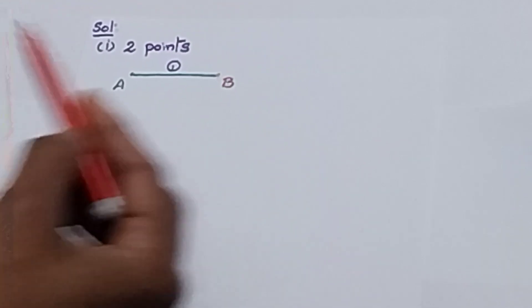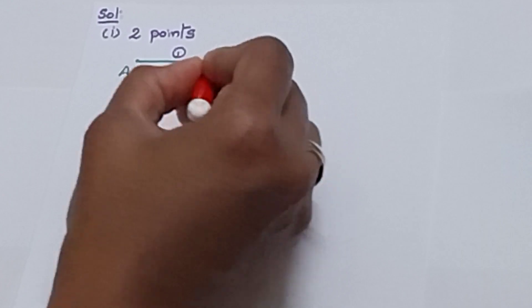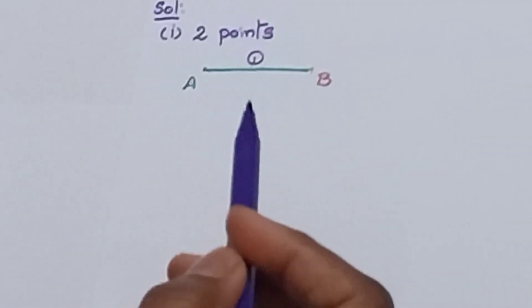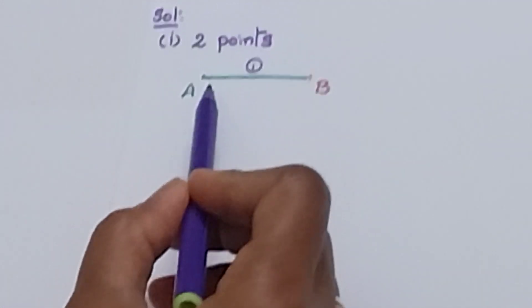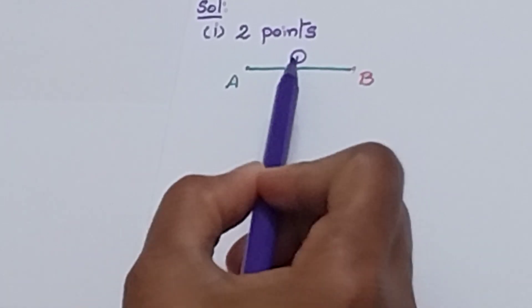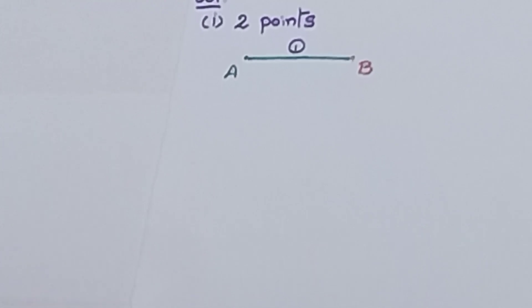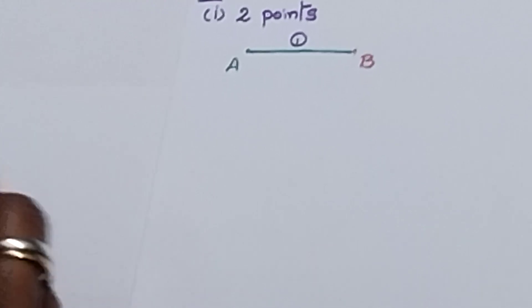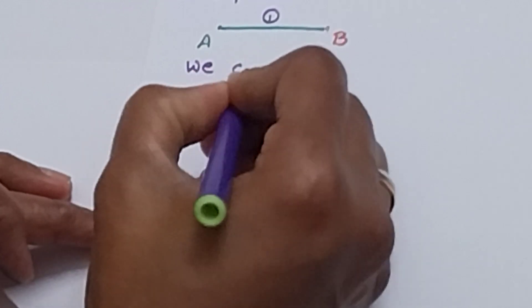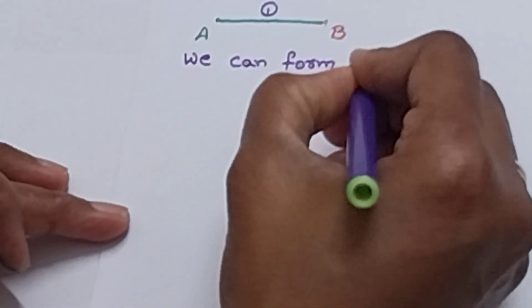Now I am taking the second point and connecting A — but from these 2 points, how many line segments did we form? One line segment. So with 2 points, we can form one line segment.